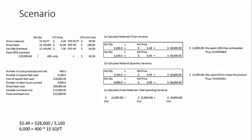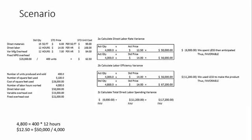The total direct materials spending variance is the materials price variance plus the material quantity variance. We have two favorable variances: $2,600 for materials price and $5,400 for material quantity, giving us a total spending variance of $8,000 favorable. The reason we break these out separately is so we know how much of the total is due to price and how much is due to quantity — if we only looked at the $8,000, we wouldn't know.